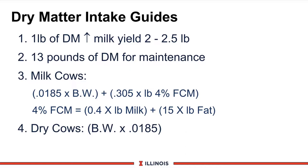Remember, milk production drives dry matter intake based on the BST work and early lactation results. The third equation looks at dry matter intake for dry cows. Roughly 2% is a good thumb rule, except when you get close to calving, and then of course it drops down 10% to 30%.